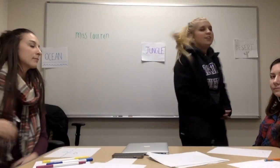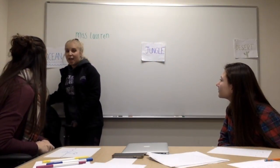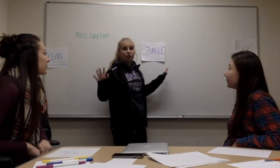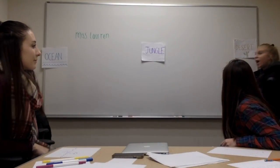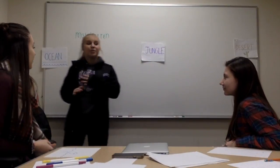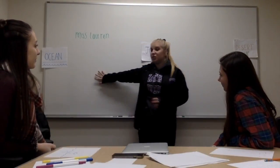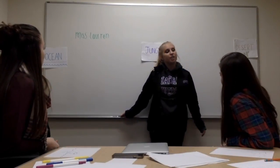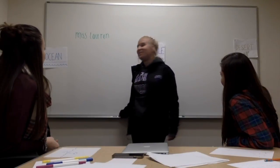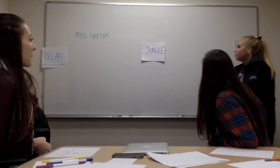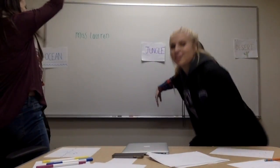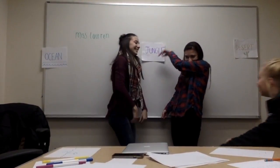Alright boys and girls, for the last activity there are three areas in the room. This area you're going to pretend is the ocean, in the middle is the jungle, and all the way over here in this corner is the desert. I'm going to say an animal out loud and you're all going to pretend that you are that animal — picture yourself as that animal and decide where you would live. Wherever you choose, go to that area and I'll tell you if you're right or wrong. You get three chances to be wrong. Okay boys and girls, pretend that you are a big giant elephant! Very good — an elephant lives in the jungle with many other animals.